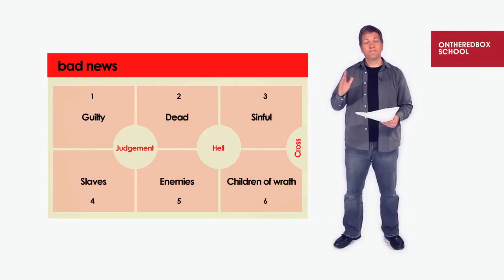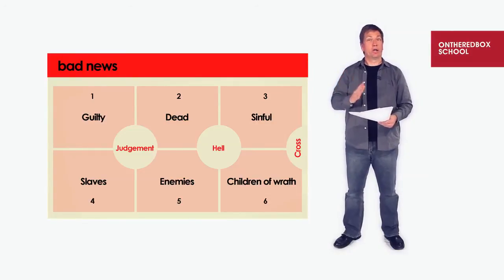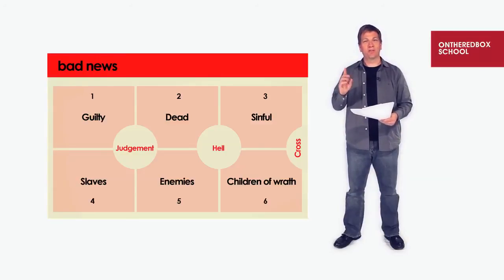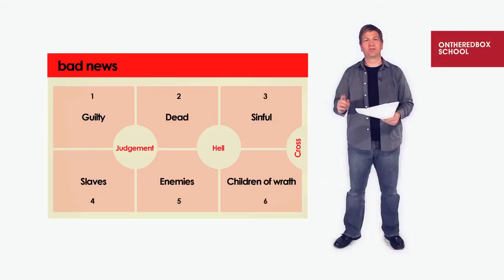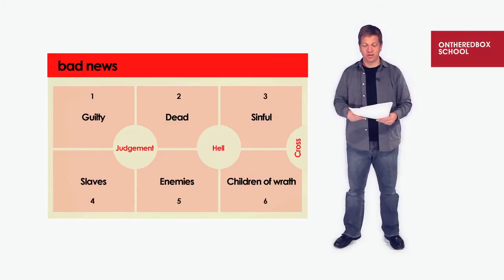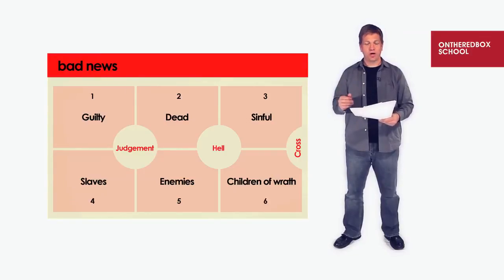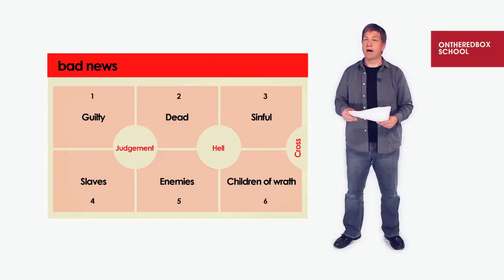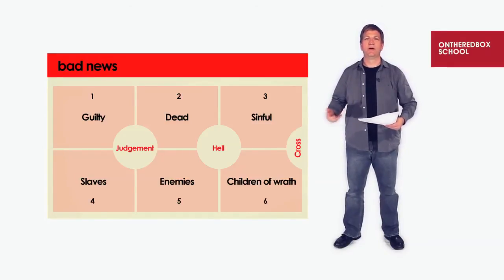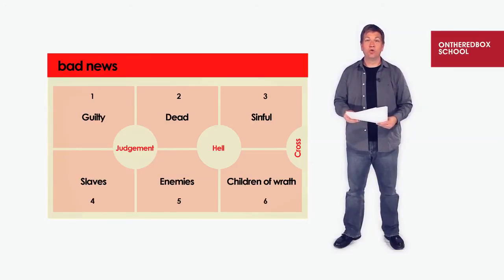Now when you structure your evangelistic message, you're not going to talk about all of the bad news — you're going to overwhelm them. You just pick one. Pick the one from the doctrine and object you selected when you began structuring your message. So once you develop the bad news, talk about — in this case justification — how we stand guilty before God, how we've disobeyed his laws, and how when we stand before him we're going to be covered with rags. What are we going to do on that day?